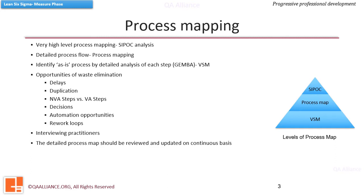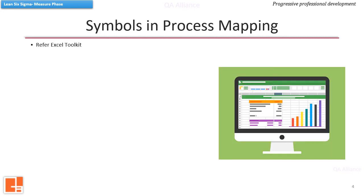Once we prepare a detailed process map, it should be reviewed and updated on a continuous basis. There are two types of VSMs to be prepared in a Lean Six Sigma project: the current as-is VSM and the future desired VSM. Though the future state can be targeted in the short term, a long-term ideal state can also be targeted. We have added worksheets in our Excel toolkit with commonly used symbols both for process maps or flowcharts as well as for value stream maps, along with their descriptions.